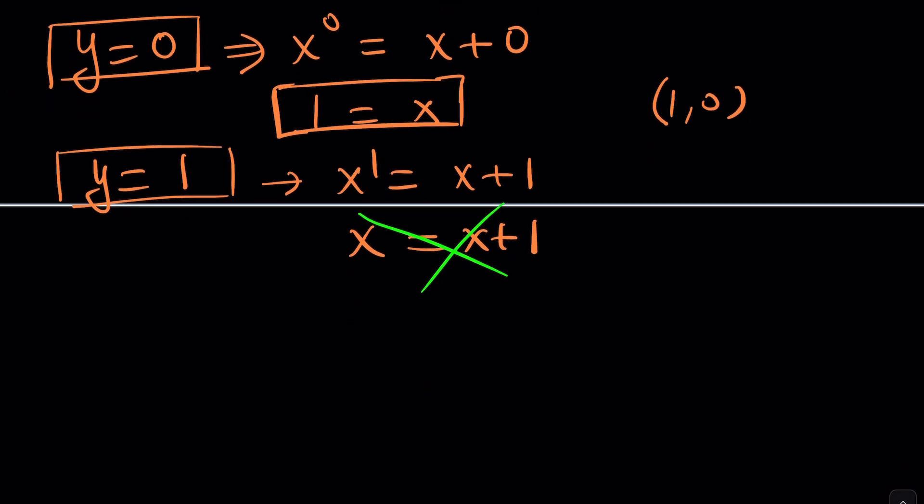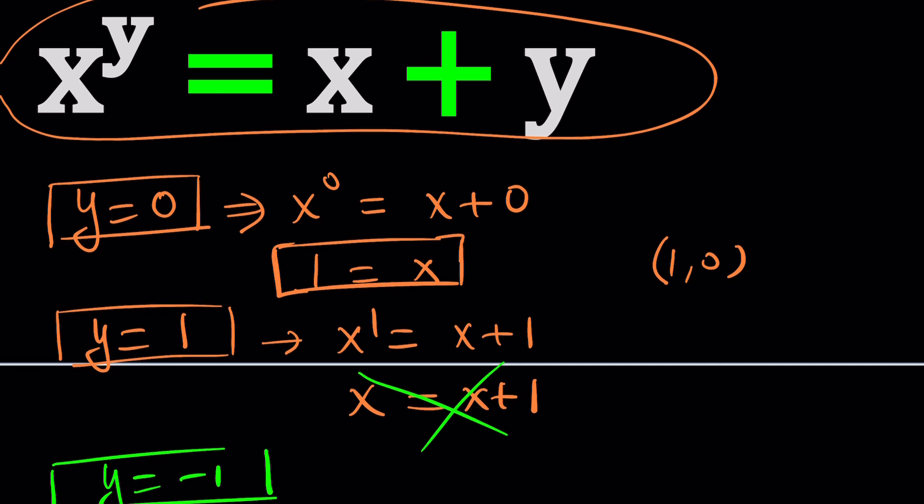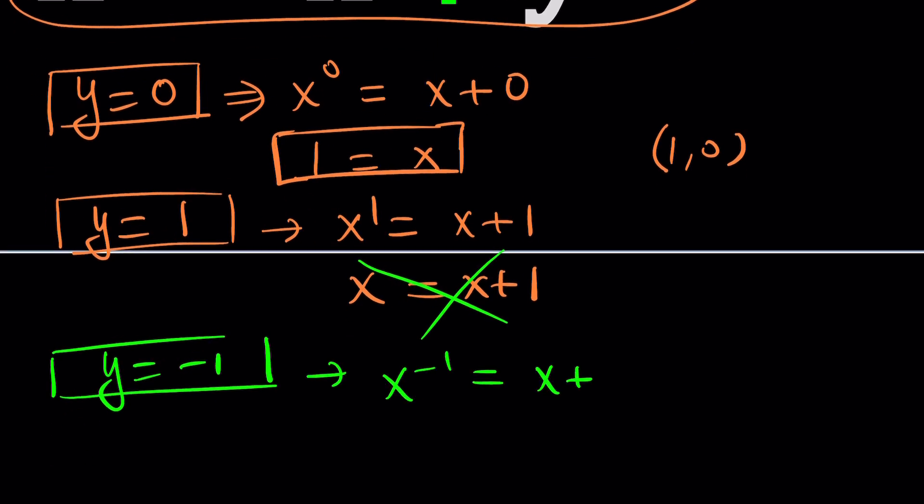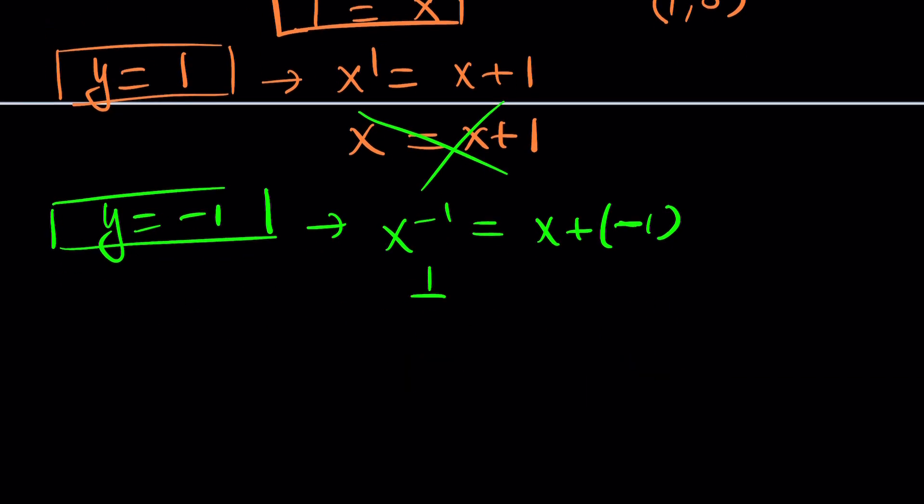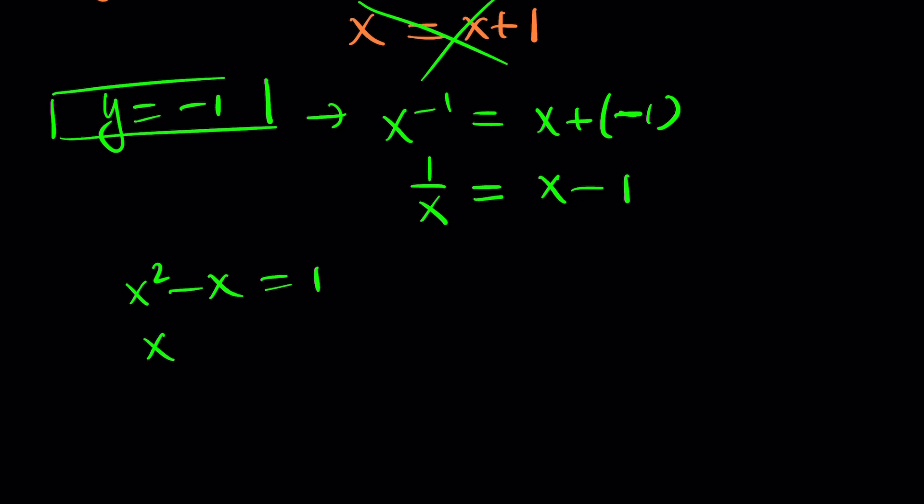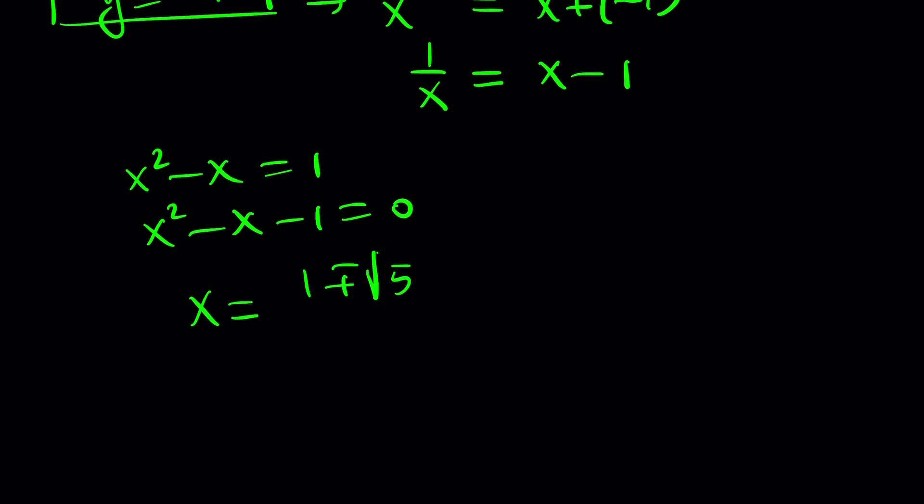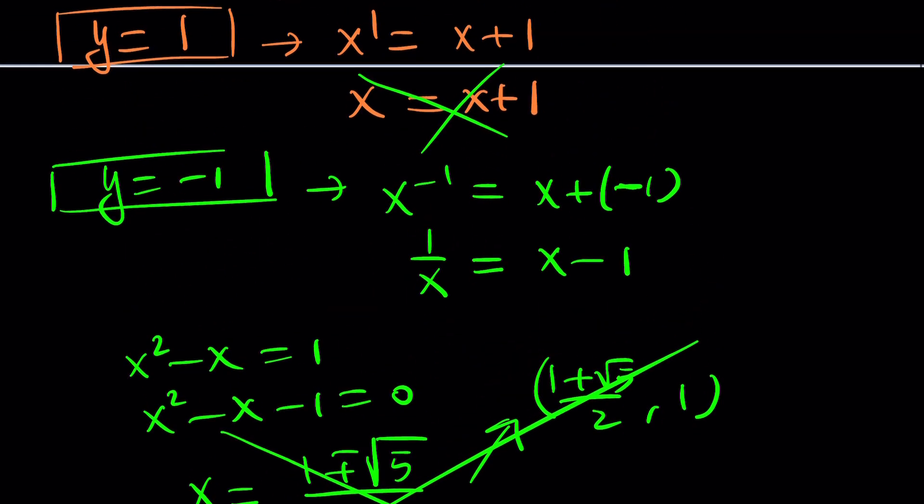The next thing I'm going to do is try y equals negative 1. y equals negative 1 gives us x to the power of negative 1 equals x minus 1. This gives us a quadratic equation: x squared minus x minus 1 equals 0. I kind of smell the golden ratio here. Negative b plus minus the square root of b squared minus 4ac, which is 5, divided by 2. Aren't x and y supposed to be integers? Yes. So these solutions do not count. Even though they're beautiful, they just won't count because we're looking for integers.